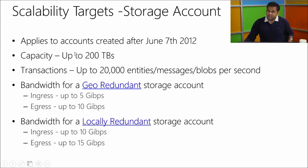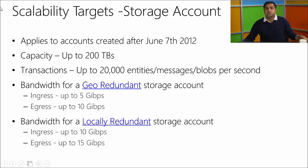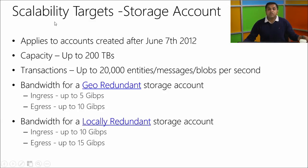Scalability targets for a storage account: for accounts created after June 7, 2012, from a capacity perspective it can contain up to 200 terabytes. From transactions, about 20,000 transactions per second. For bandwidth — depending on geo-redundant or locally-redundant storage — ingress up to 5 gigabits per second, or up to 10 gigabits per second for locally-redundant. From egress, 10 to 15 gigabits per second. Knowing these limits is critical for determining whether you need multiple storage accounts.